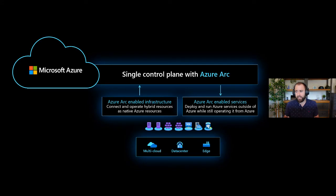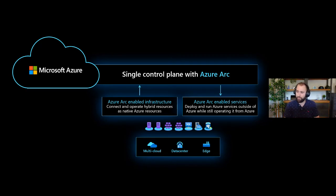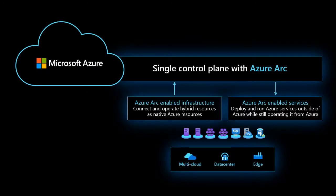Azure Arc helps us with operations - getting visibility for security, compliance, management and operations. It helps bring Azure services to anywhere. It also provides tooling so you can deploy cloud native applications built on Kubernetes or Azure PaaS services to basically any environment. Technically, we categorize this into Azure Arc enabled infrastructure - connecting servers and Kubernetes clusters to the Azure control plane - and Azure Arc enabled services, which deploys Azure services outside of Azure.